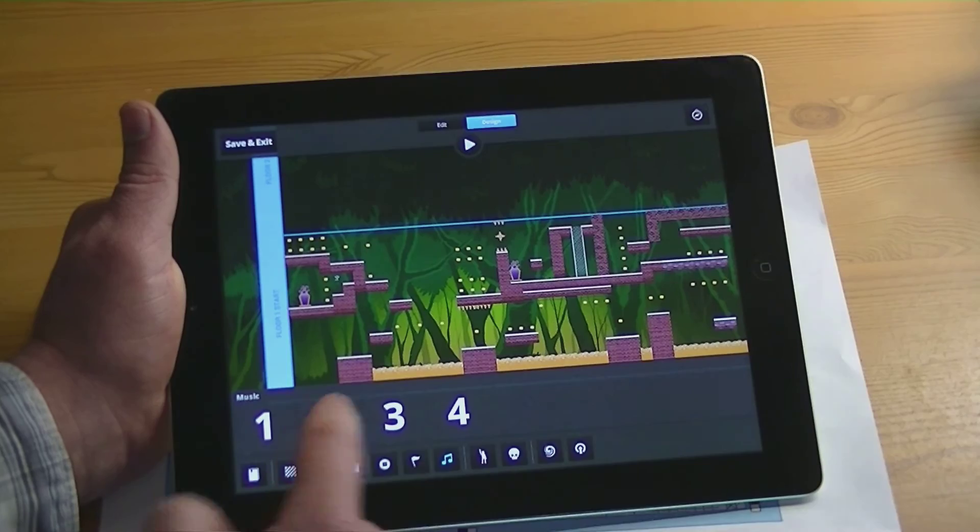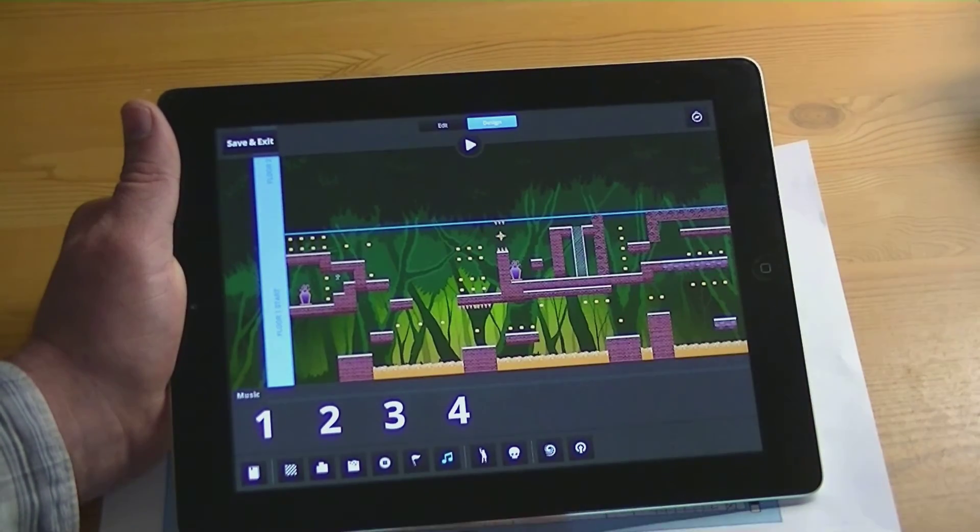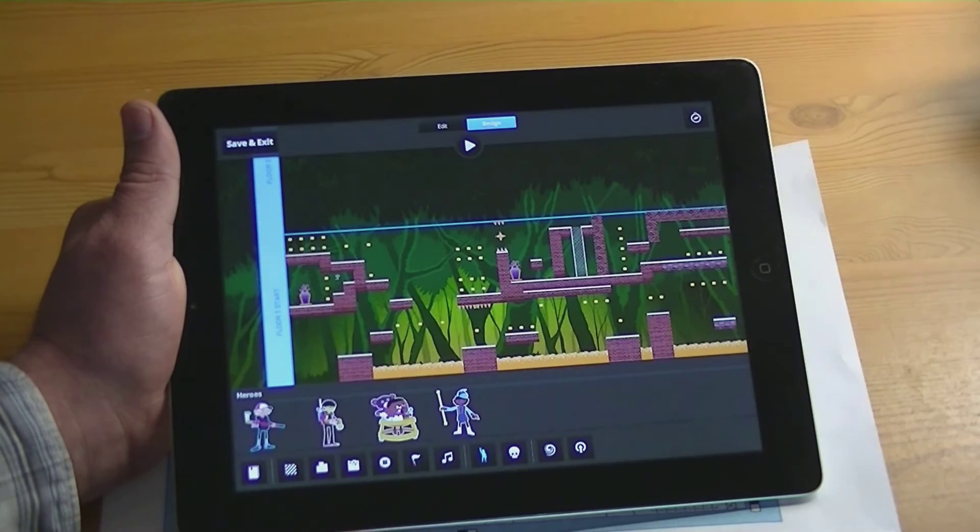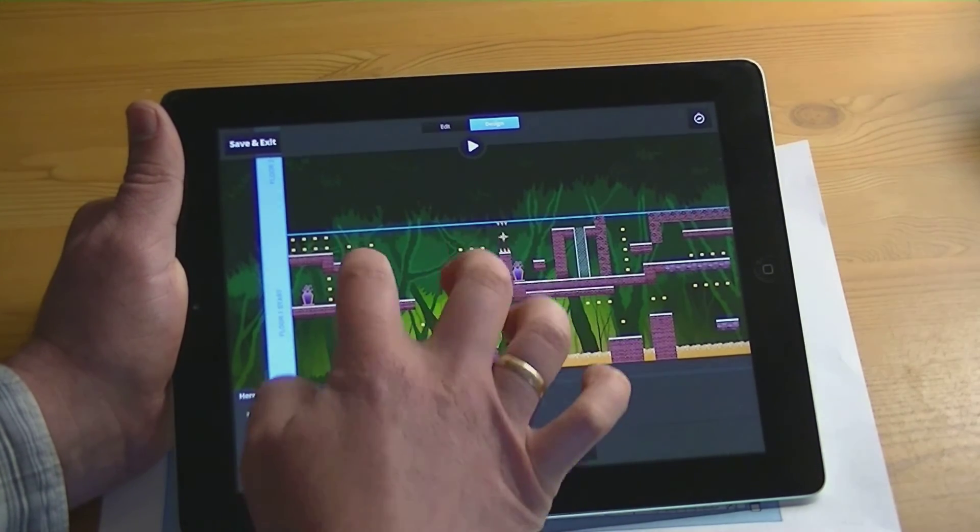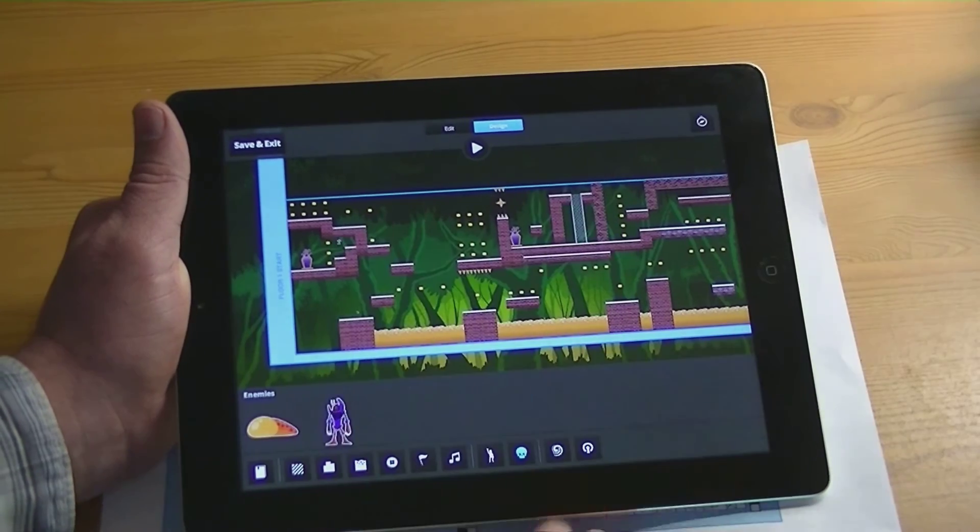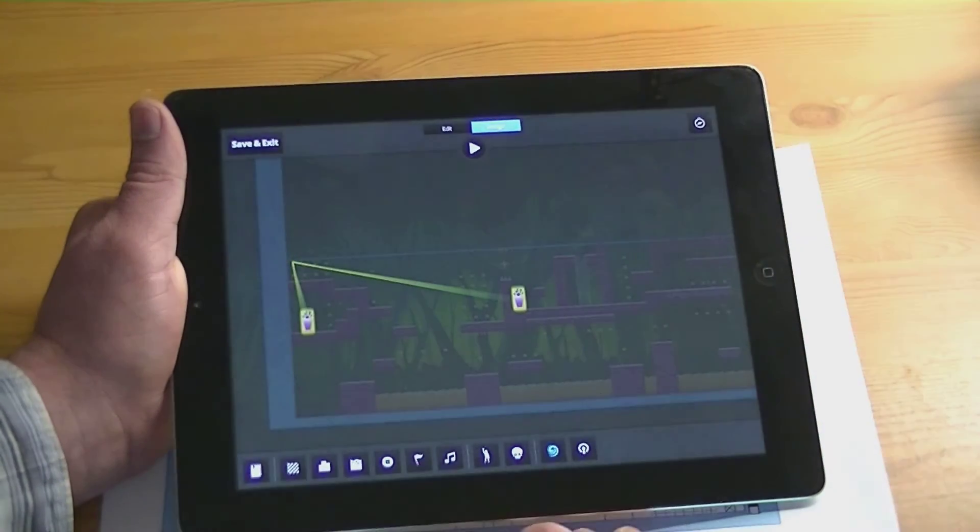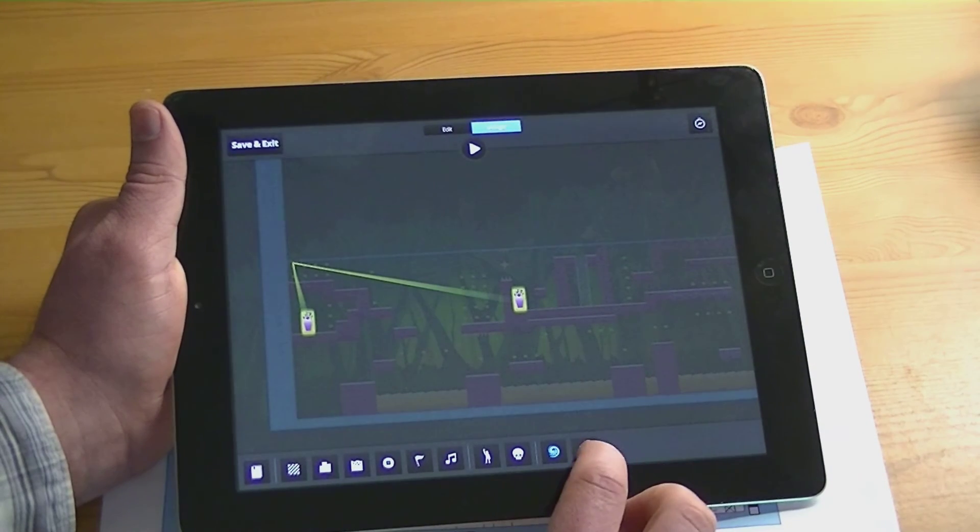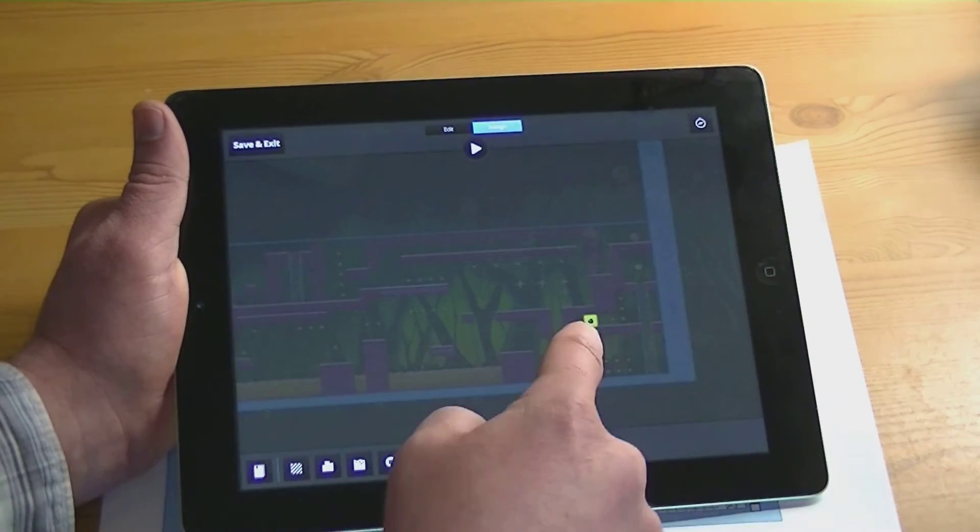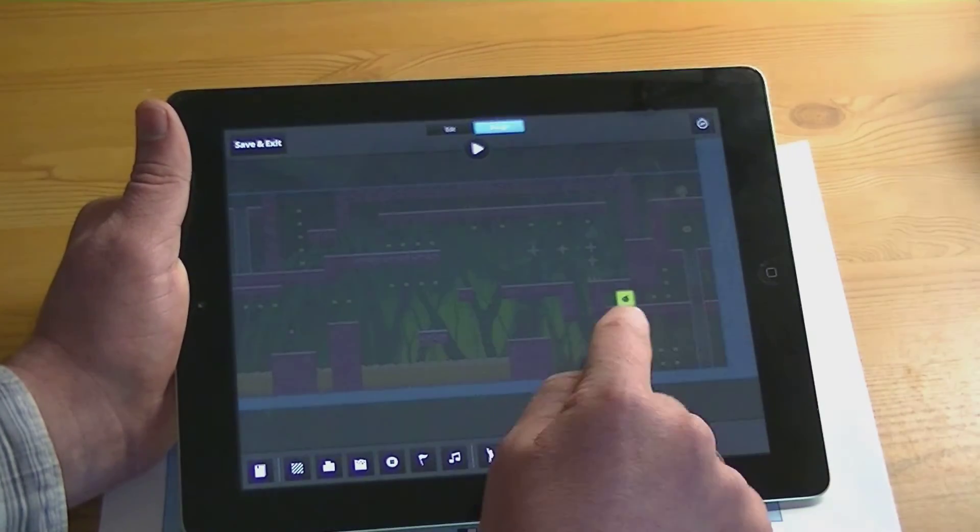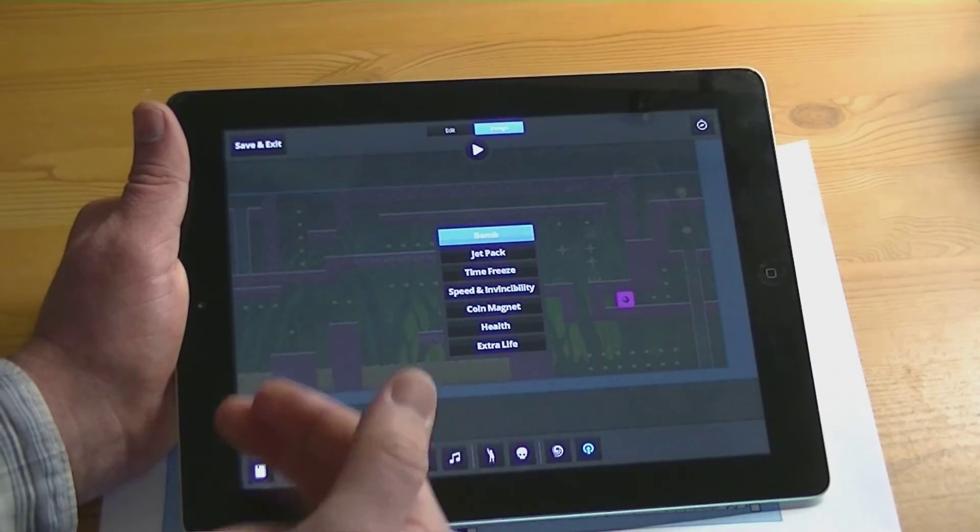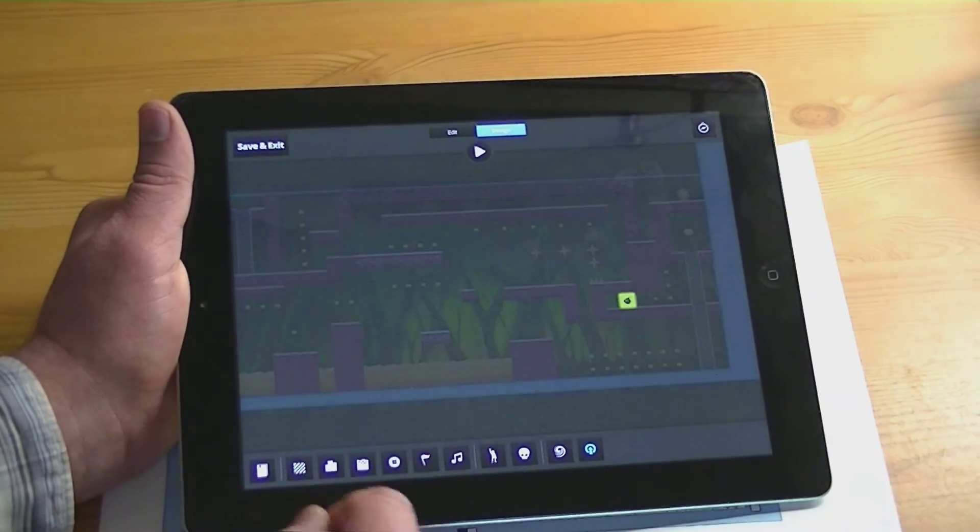Next up you've got a couple music choices. I'll just choose one of them. Then you have your heroes, so who you're going to be. I don't have any enemies added at the moment, I'll just leave that alone. This is how your portals are going to communicate to each other. Then you have your power-ups. I have one power-up in this level that I've created, and what it is is a bomb so I have some walls I can blow up. But you can choose things like jet packs, and time freeze if they have enemies, speed, invincibility, coin magnet, health, extra life, and so on.